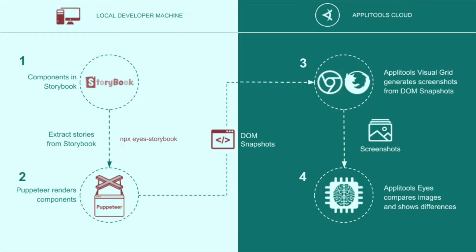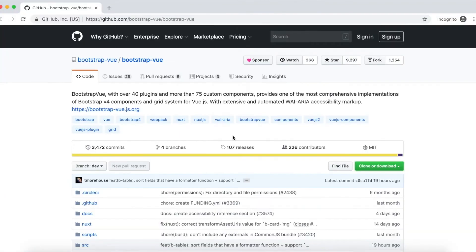There, the Applitools Visual Grid component kicks in and generates screenshots from the DOM snapshots. The snapshots are then compared to any baseline snapshots and the visual differences are reported on the Applitools dashboard. I will start by cloning the Bootstrap Vue.js library repository on my machine.